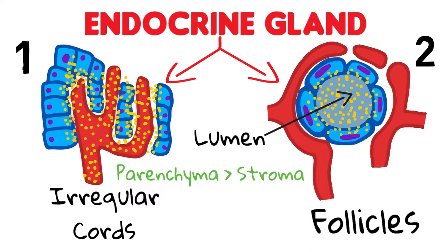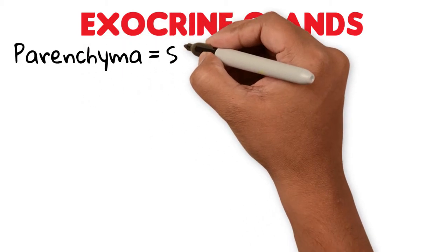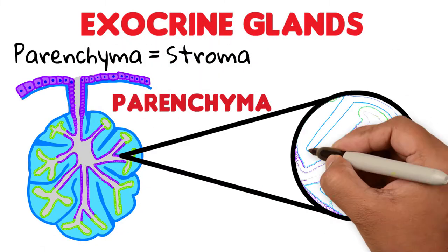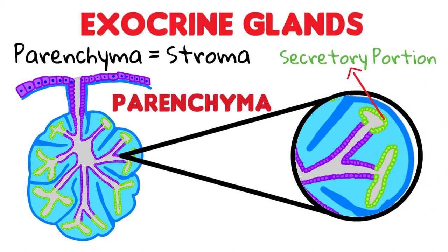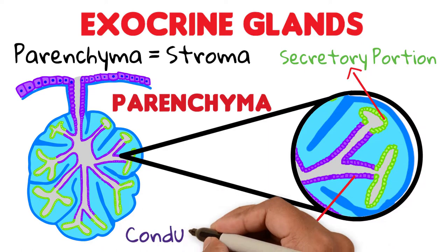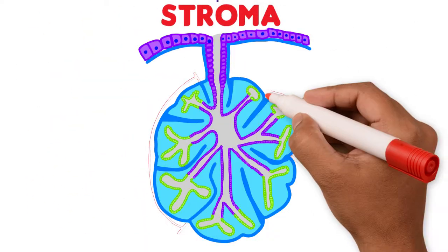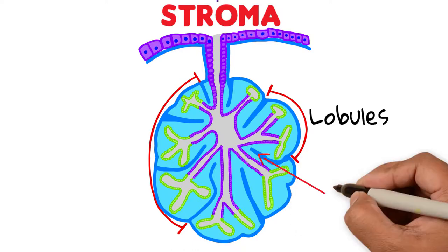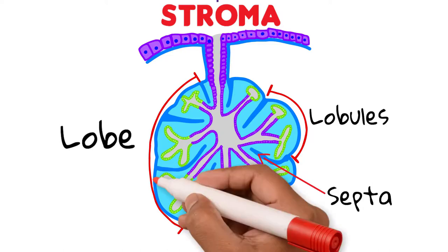Endocrine glands are composed mostly of parenchyma — meaning secretory cells — and minimal connective tissue or stroma. Exocrine glands, on the other hand, are composed of both parenchyma and stroma. The parenchyma is divided into two portions: the secretory portion, also called the acinus, formed by secretory epithelial cells, and the conducting portion — the ducts — made of non-secretory epithelial cells. The stroma divides the gland into lobules via partitions called septa, and multiple lobules form lobes, all externally surrounded by the capsule.